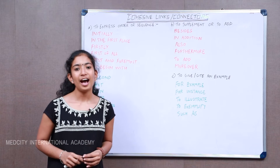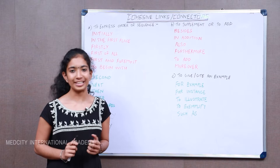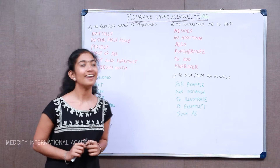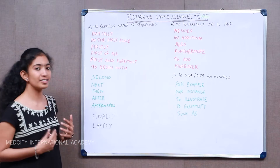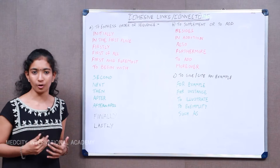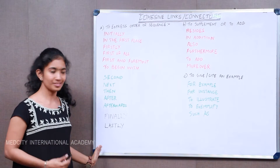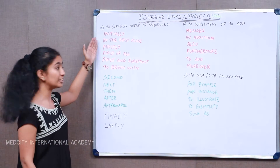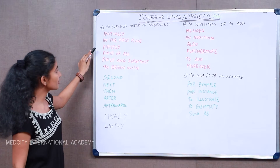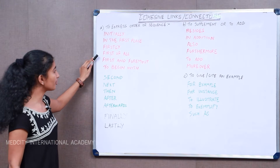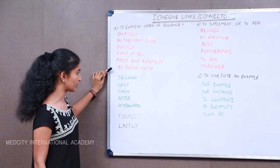So here I'm going to give you a list of cohesive links. Let's have a look, shall we? If you want to express something in an order or in a sequence, you can use the following words: Initially, in the first place, firstly, first of all, first and foremost, to begin with.